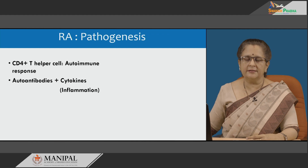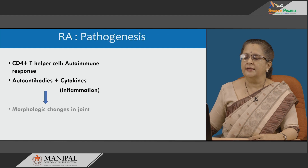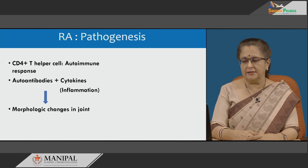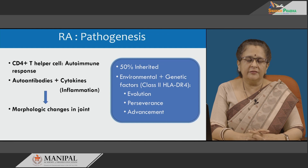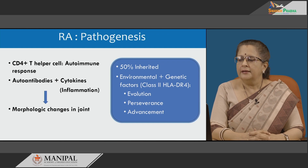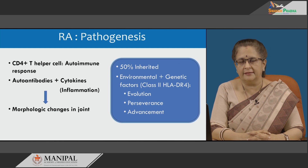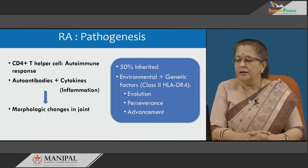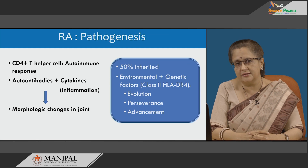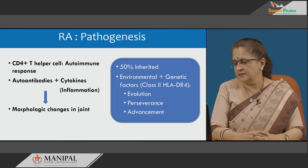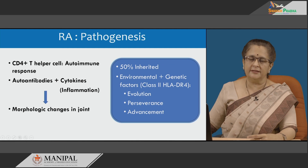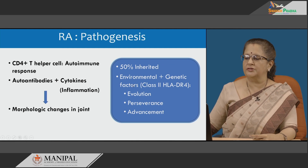Both autoantibodies producing immune complexes and inflammation induced by cytokines give rise to morphological changes in the joint. Fifty percent of these cases are inherited. Environmental factors and genetic factors, specifically class II HLA-DR4, are responsible for the perseverance and progression of the disease. It is more severe in patients in whom a hereditary factor is associated.